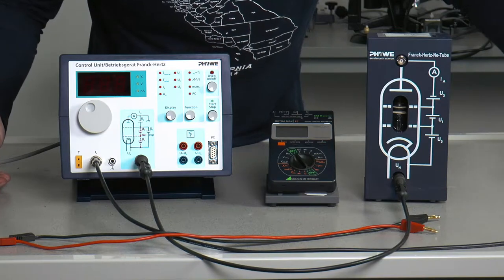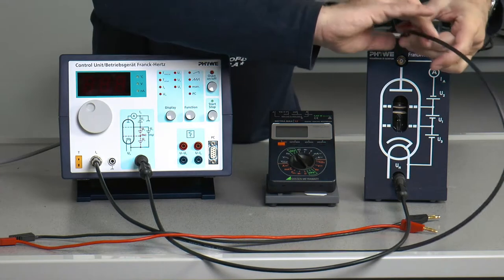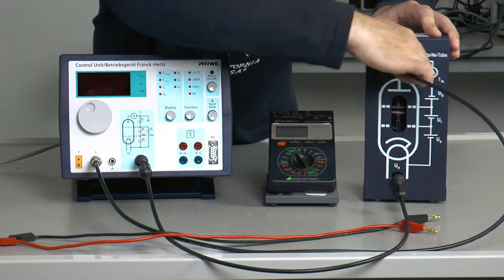Furthermore, the experiment shows that the transfer of energy into the bound electrons takes place only in a quantized manner. Instead of the classical variant with mercury,